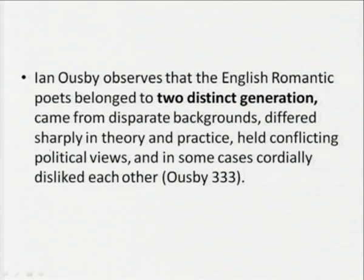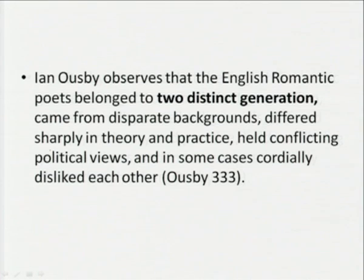As Ian Ousby observes, the English Romantic poets belong to two distinct generations, came from disparate backgrounds, differed sharply in theory and practice, and held conflicting political views. Some were for the revolution, some against. The aims of liberty, fraternity, and equality somewhere got diluted — later there was disillusionment, and again hope.